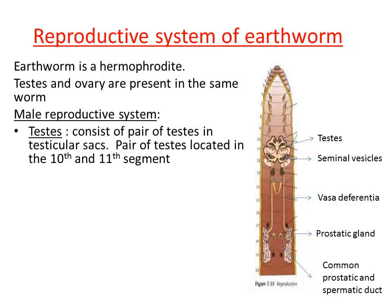There are two pairs of testes present in the earthworm. Each pair is located within a testicular sac. In the 10th segment we have a testicular sac containing a pair of testes, and similarly the 11th segment also consists of a testicular sac with a pair of testes. The testes are the main organs where the formation of male gametes takes place.